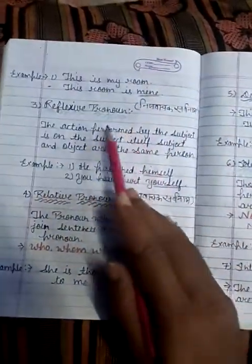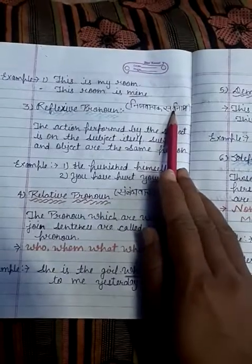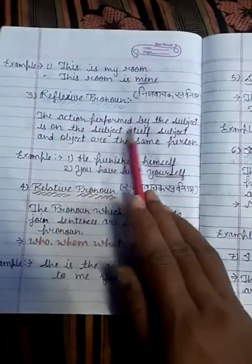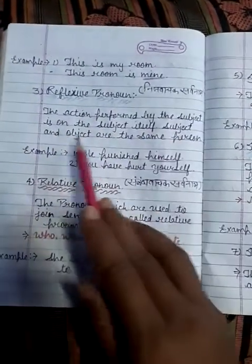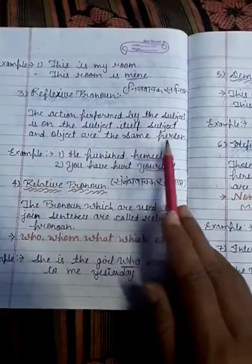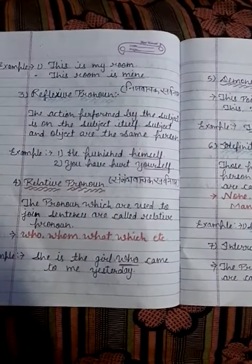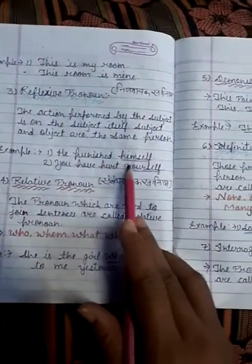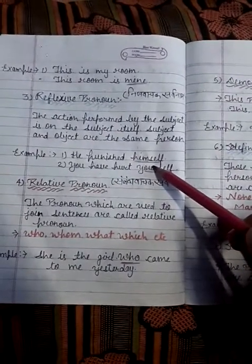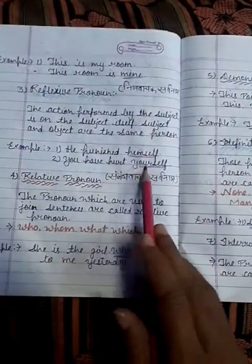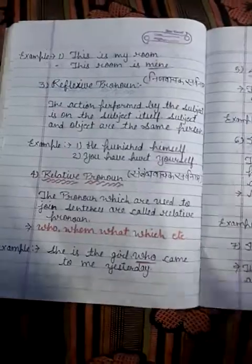Next, reflexive pronoun. Reflexive pronoun को हिंदी में निजवाचक सर्वनाम कहते हैं. The action performed by the subject is on the subject itself — subject and object are the same person. इस सर्वनाम में कर्ता स्वयं के द्वारा किए गए कार्य को प्रदर्शित करता है. Example: 'He punished himself' — उसने अपने आप को सजा दी. यहां पर 'himself' reflexive pronoun है. 'You have hurt yourself' — आपने अपने आप को दुखी किया. Thank you.